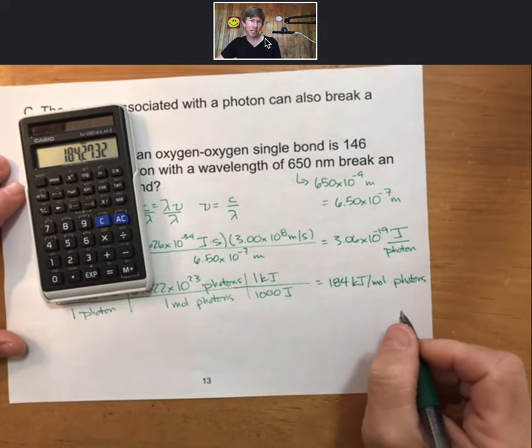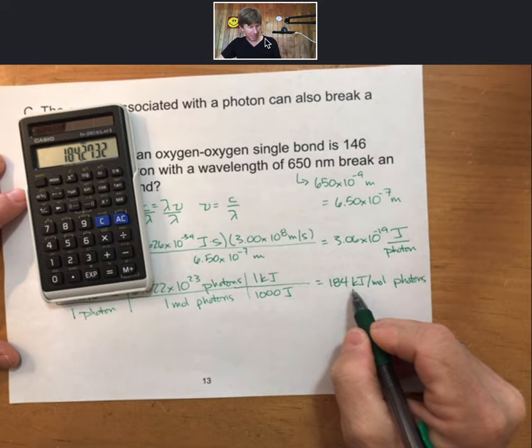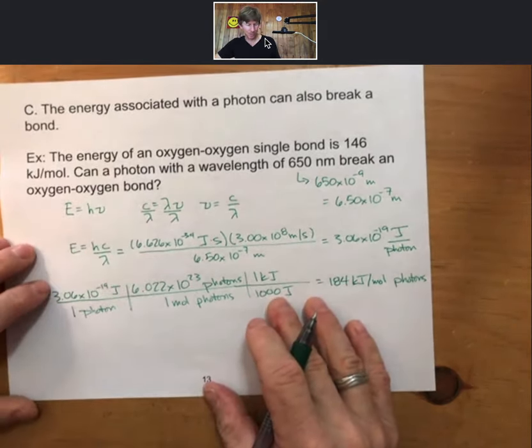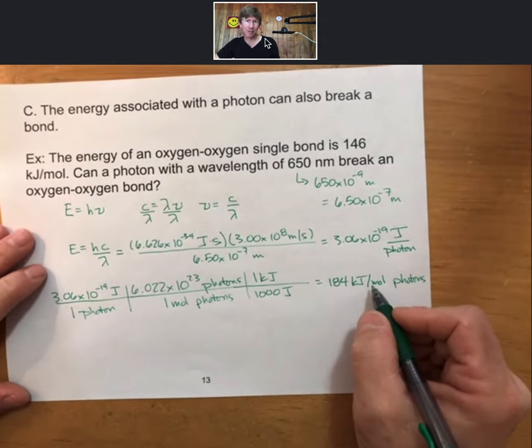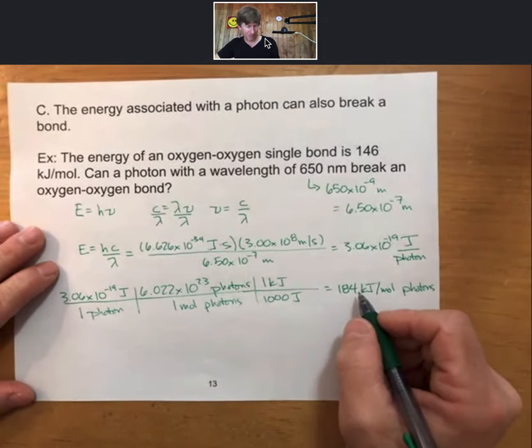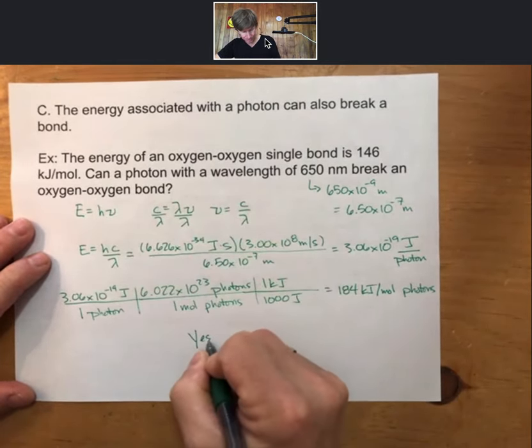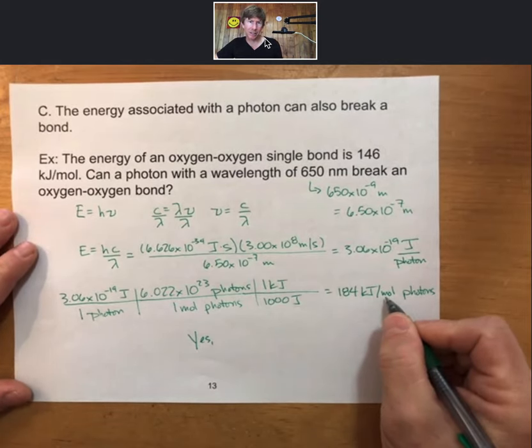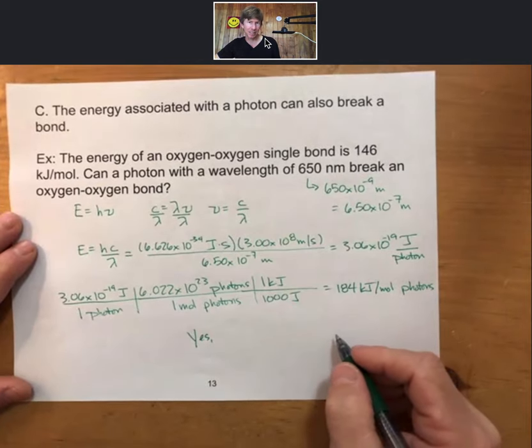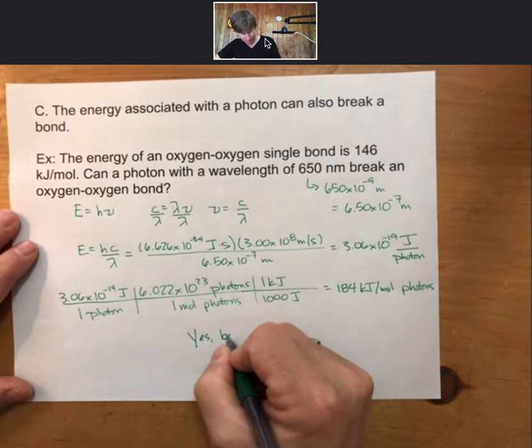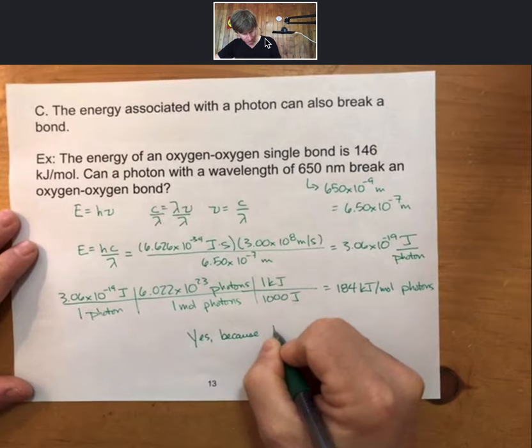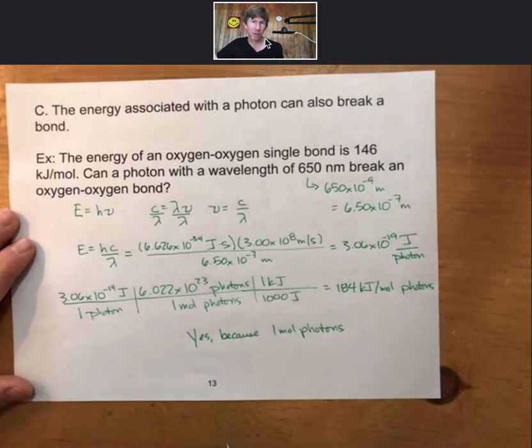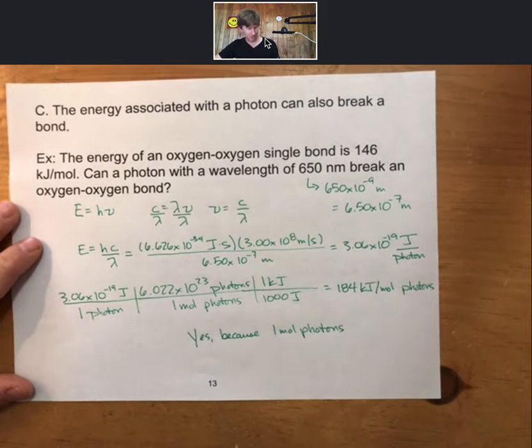For a mole of photons, so yes, because this number is larger than 146 kilojoules per mole, the photons, each of them will break an oxygen-oxygen single bond. Can a photon? Yes, because the energy in a mole of these photons, so 650 nanometer photons, is larger. One mole of photons has enough energy to break one mole of oxygen-oxygen single bonds.